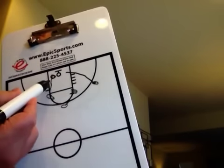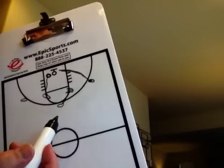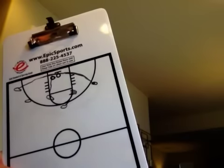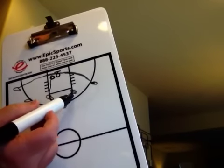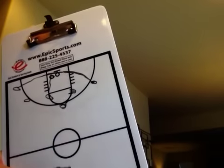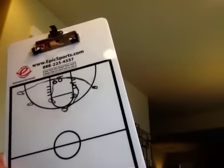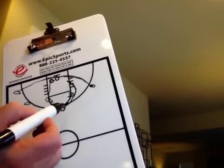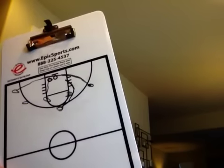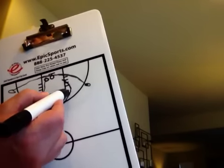Ball goes here, this guy drops down to set a screen, and this guy cuts back door looking for a pass. He comes off that screen if he didn't get a pass and swings over to the wing. So this guy catches a pass and looks for that. If it's not there, the point guard — the guy who made the original pass — comes off of him using him for a screen, accepting a handoff, running shoulder to shoulder so his defender can't fit between them. That's an automatic screen created by running shoulder to shoulder and trying to get a handoff.